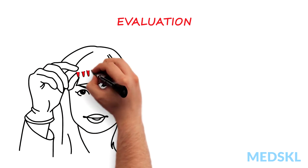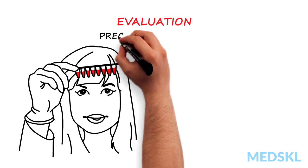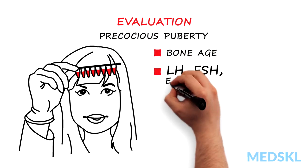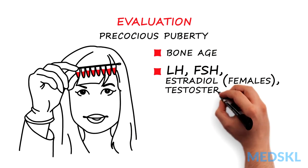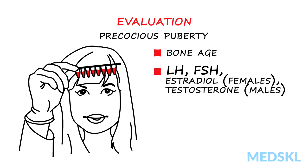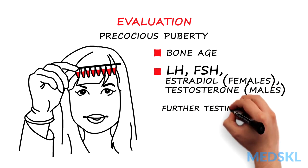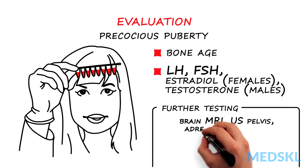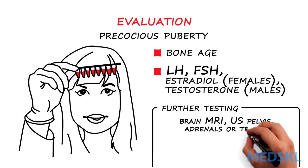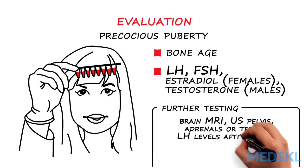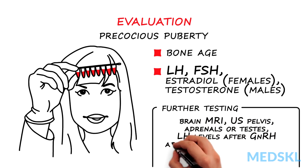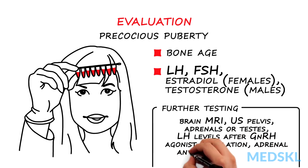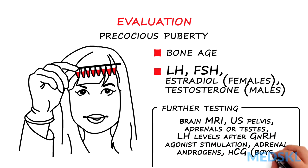Investigations for precocious puberty include a bone age, LH, FSH, estradiol, and testosterone. Further testing may include brain MRI, ultrasound of the pelvis, adrenals or testes, measuring LH levels after GnRH agonist stimulation, and adrenal androgens or HCG in boys.